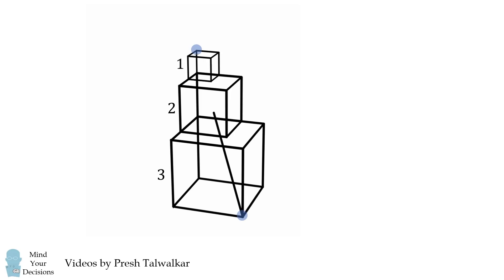Imagine drawing a line between opposite corners in this diagram. The question is, what is the length of the line contained inside the middle cube?